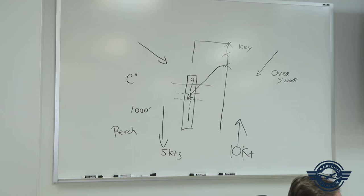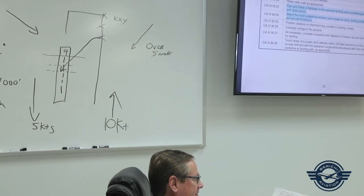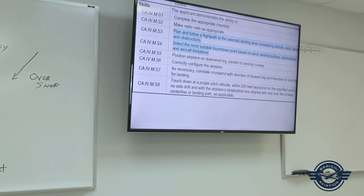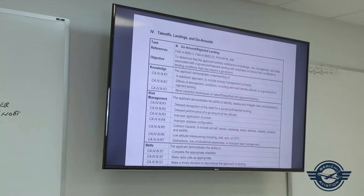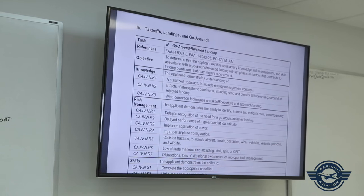Looking at the skills section, Sierra 3 and Sierra 4: plan and follow a flight path to a selected landing area considering altitude, wind, terrain, and obstructions; select the most suitable touchdown point based on wind, landing surface, obstructions, and aircraft limitations. Page 33 covers go-arounds — nothing has changed about go-arounds, and it's important to understand what can go wrong.